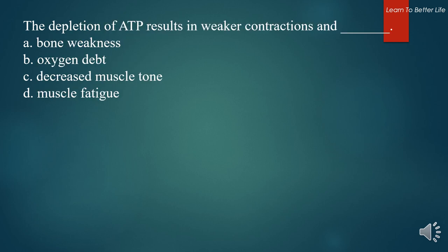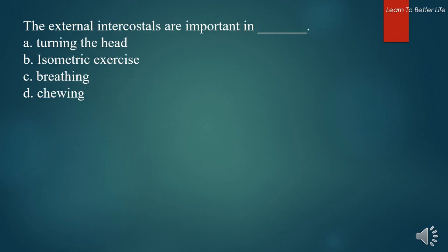The depletion of ATP results in weaker contractions and what? A. Bone weakness. B. Oxygen debt. C. Decreased muscle tone. D. Muscle fatigue. The answer is D. Muscle fatigue. The external intercostals are important in. A. Turning the head. B. Isometric exercise. C. Breathing. D. Chewing. The answer is C. Breathing.